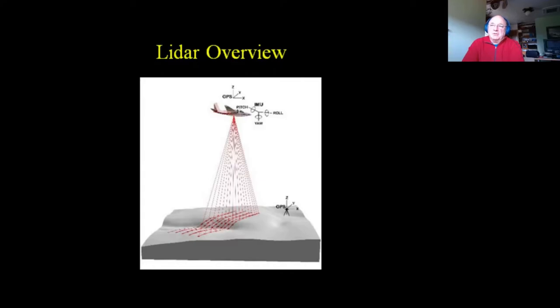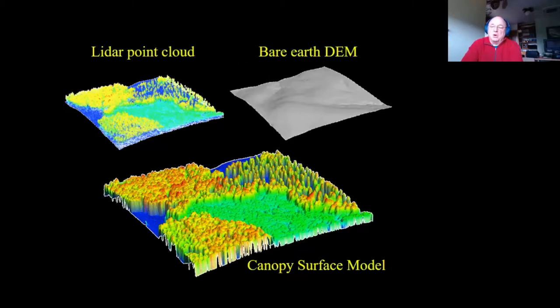Those returns give you a cloud of points that are actually surveyed. Every point that is returned is a surveyed location — and that's the key difference between LIDAR and ortho imagery: every point location is measured with an actual survey. Based on the reflectance, you can strip away the vegetation or infrastructure and have a bare earth digital elevation model, and then the top surface model can show the vegetation.